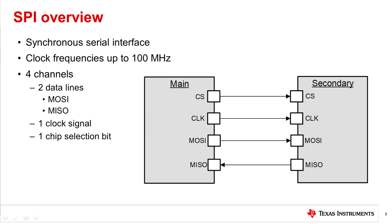SPI is a synchronous serial interface used by FPGAs and microcontrollers to communicate to a variety of peripherals, such as flash memories, sensors, ADCs, and SD cards over short distances.